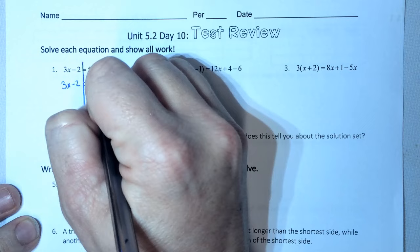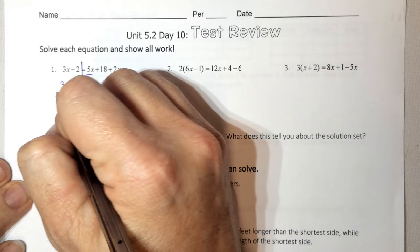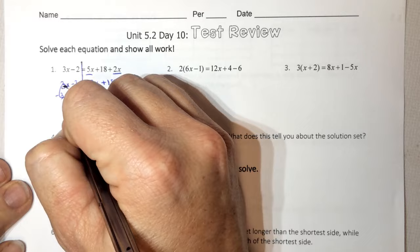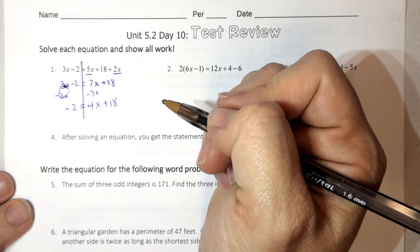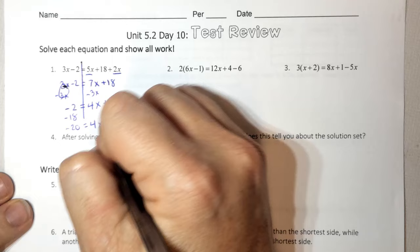When I have a variable on both sides, I like to move my smallest variable first. So minus 3x, minus 3x. And I have negative 2 equals 4x plus 18. Now I have to get my x by itself. So I need to do minus 18, minus 18. And I have negative 20 equals 4x. Lastly, I'm going to divide both sides by 4. And I get x equals negative 5.